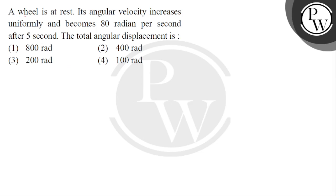Hello children, let's read the question. A wheel is at rest. Its angular velocity increases uniformly and becomes 80 radian per second after 5 seconds. The total angular displacement is.